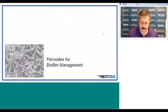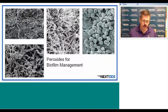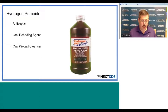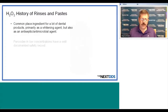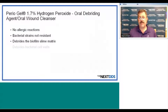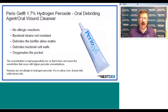Let's talk more about peroxides. It's really an ideal material because it oxygenates everything, breaks down the biofilm, and there's no resistance from the bacteria. It's antiseptic, an oral debriding agent, and used for oral wound cleansing. Typically what we get in the store is a 3% solution. There are a lot of products on the market with peroxide — it's a commonplace ingredient in dental products primarily as a whitening agent, but also as an antiseptic and antimicrobial agent at low concentrations with a very well-documented safety record. We're going to talk about a specific one: periogel, which is a 1.7% hydrogen peroxide gel.